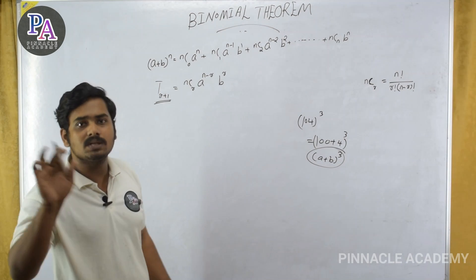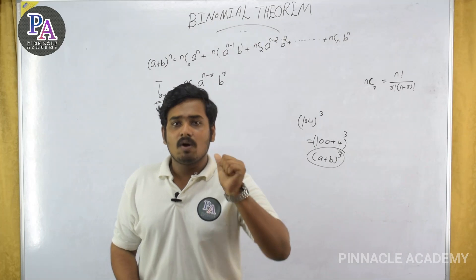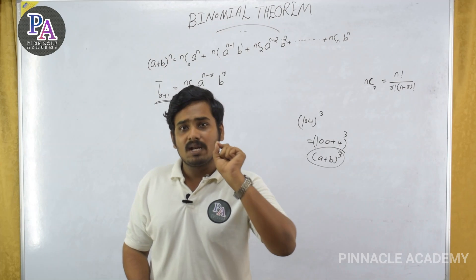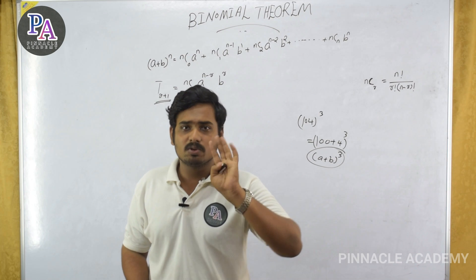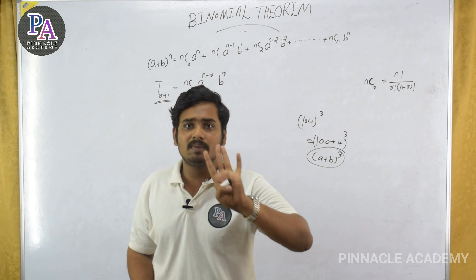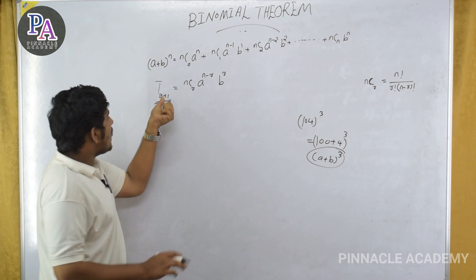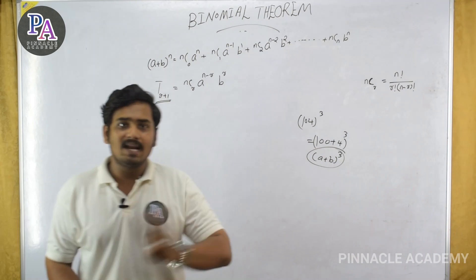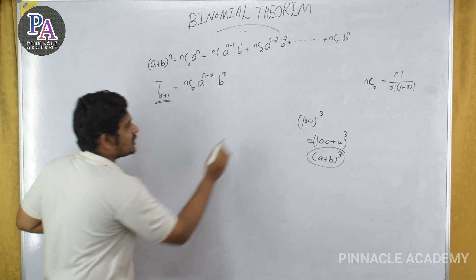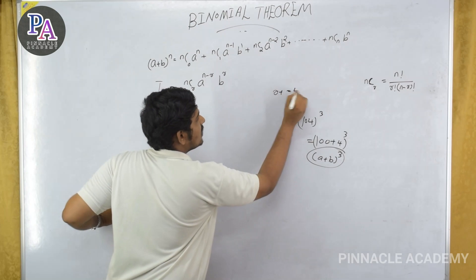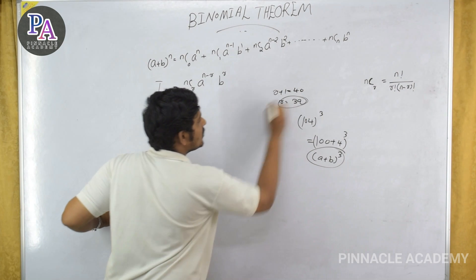Because r plus 1 is the term number — if you have to find the 40th term, r is 39. If you have to do it, concentrate: you have to find r such that r plus 1 equals 40, so r equals 39. The value of r is the power.